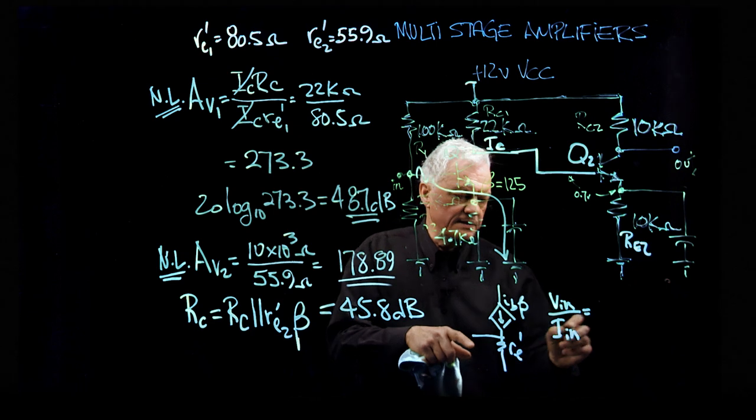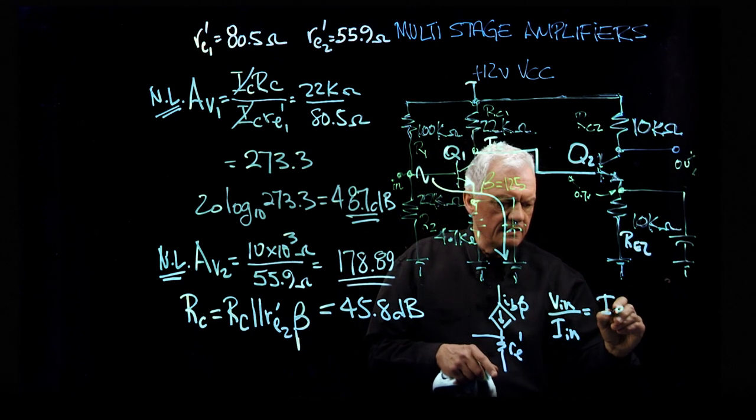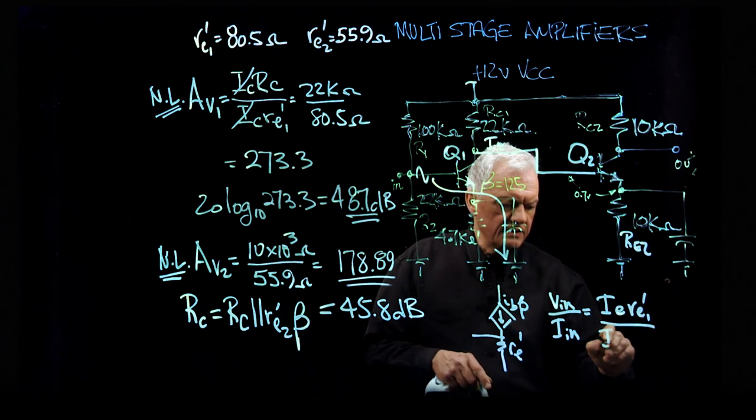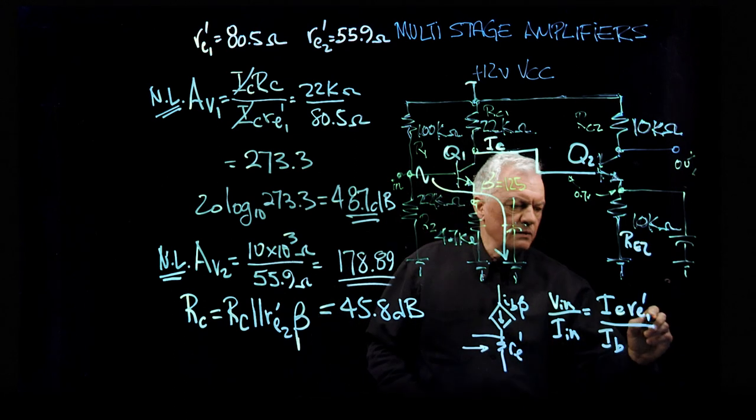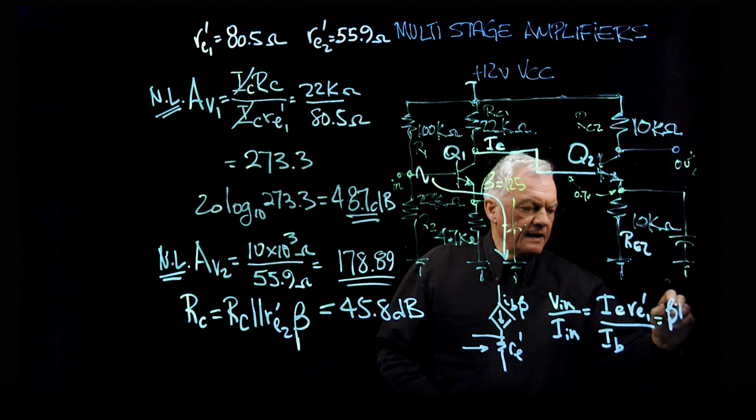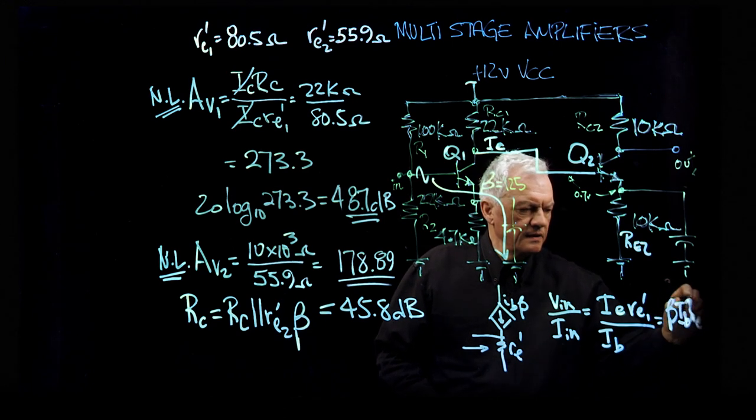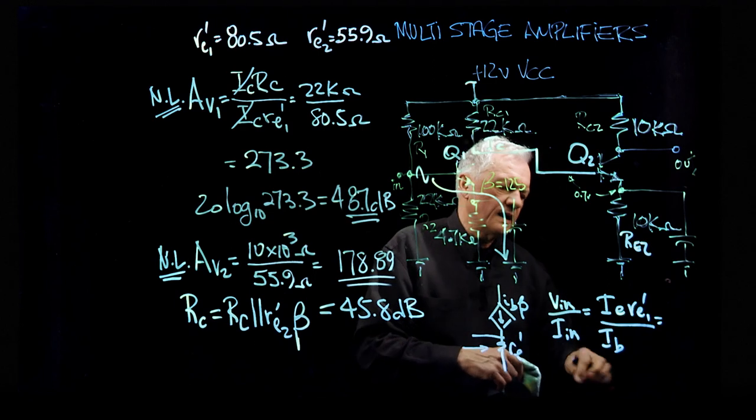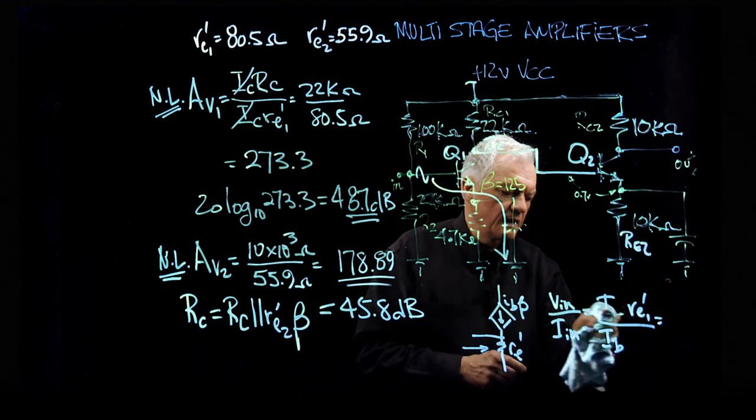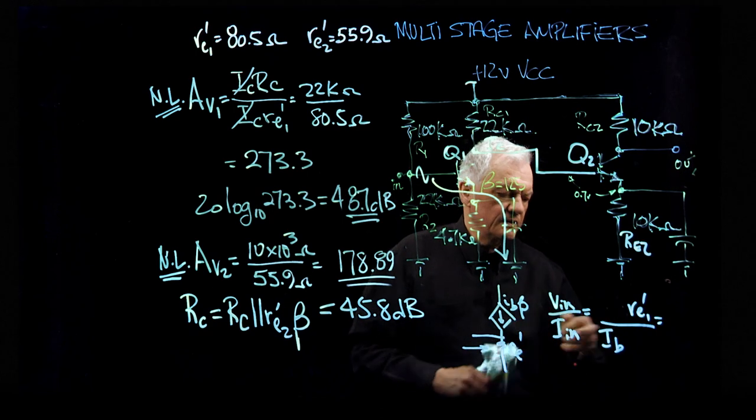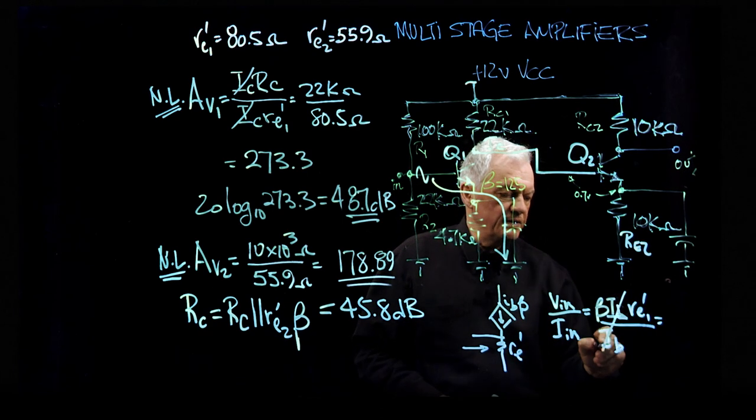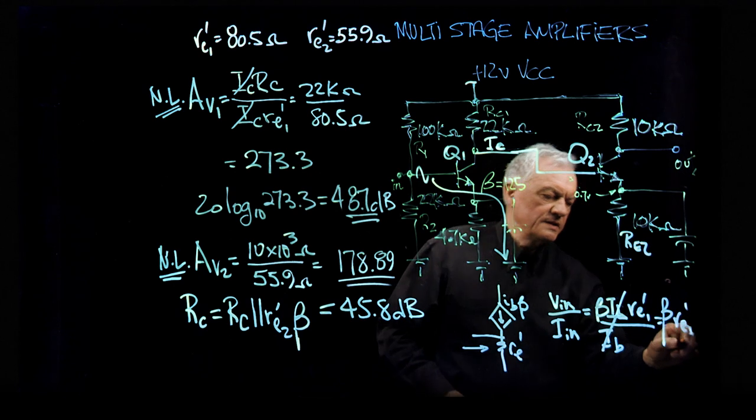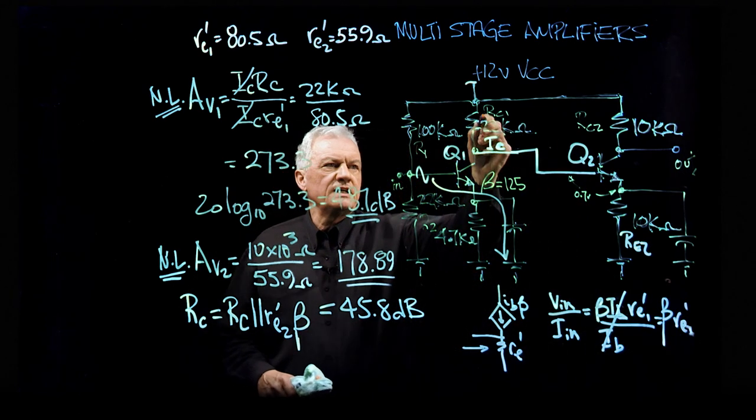If the voltage in is essentially IE times RE prime in this case here, and the current in is I small b, the current in is small IB. What we've got is basically beta I small b RE prime. So instead of IE here, we've got beta IB. Remember, beta IB is equal to IE is equal to IC. So here we have beta IB, and these two IBs will cancel out. So the resistance looking in will be, in this case here, beta times RE prime.